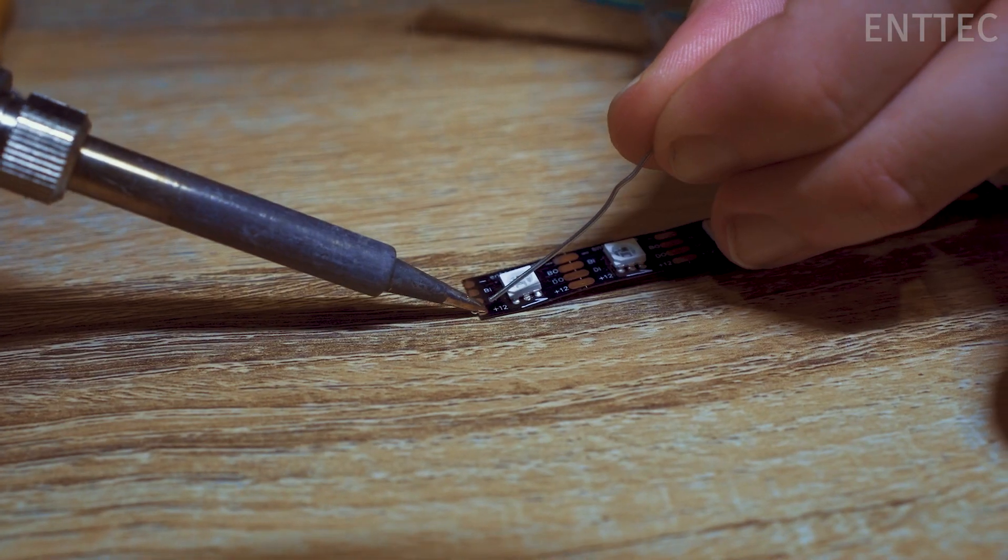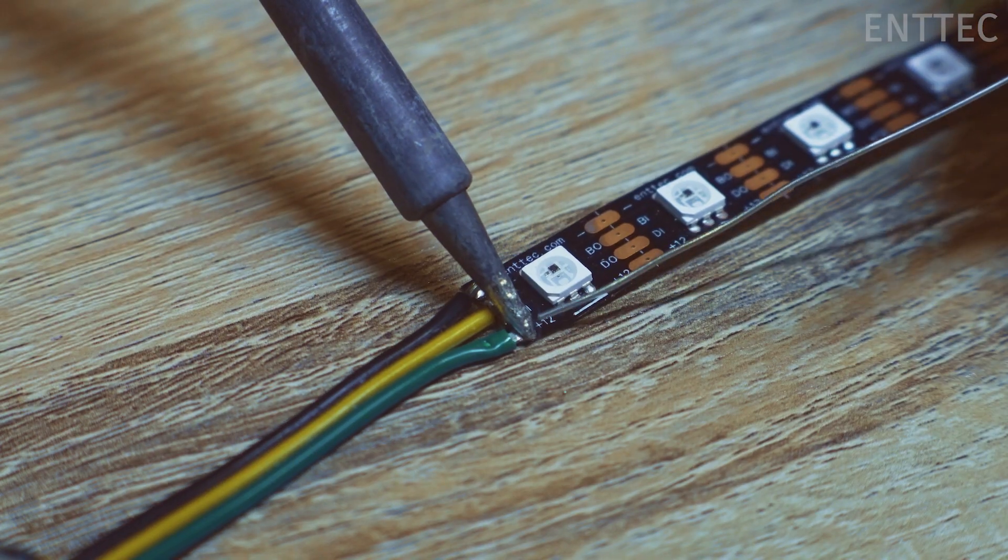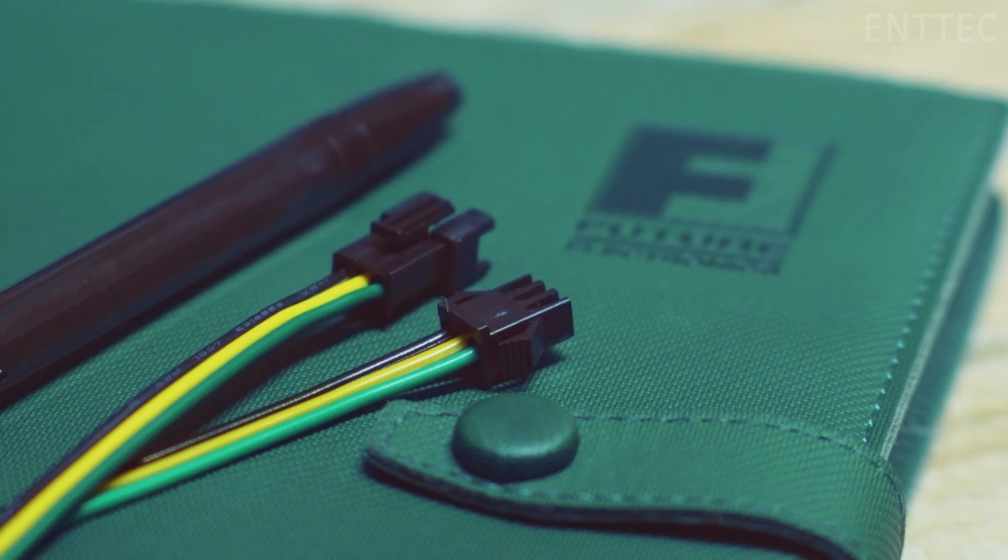Now, it's time to solder your connector to your LED tape. Remember, you can use some blue tack to help hold your LED tape to the table during this process. Don't forget to note down your colour configuration for later.